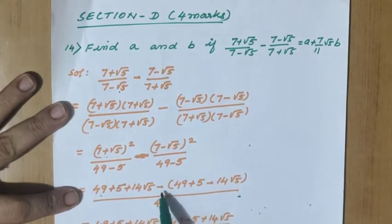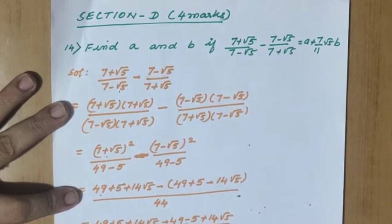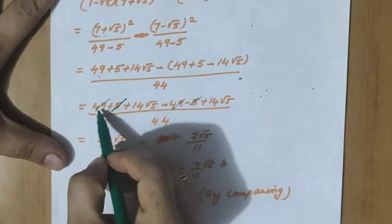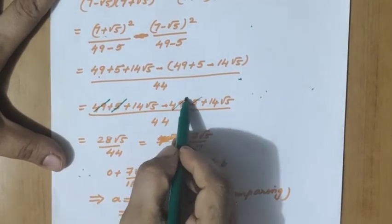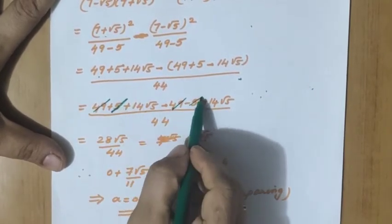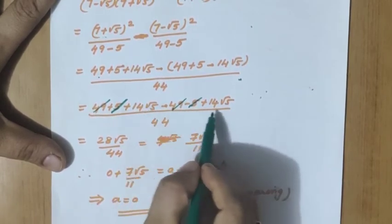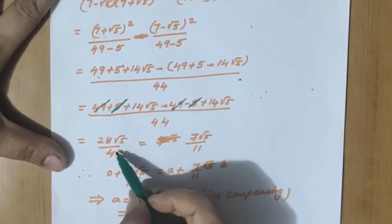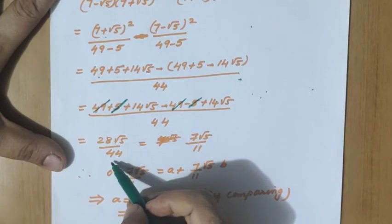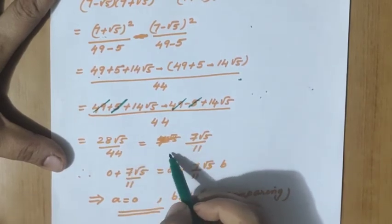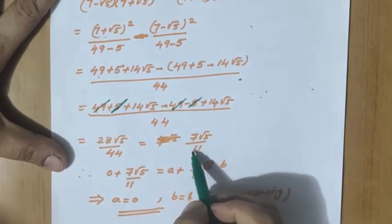Similarly, A minus B whole square has the same terms but with a minus middle term. After expanding with the minus sign, 49 and minus 49 cancel, and 5 and minus 5 cancel. The remaining terms are 14 root 5 and 14 root 5, giving 28 root 5. Dividing by 44 and cancelling by 4, we get 7 root 5 by 11.